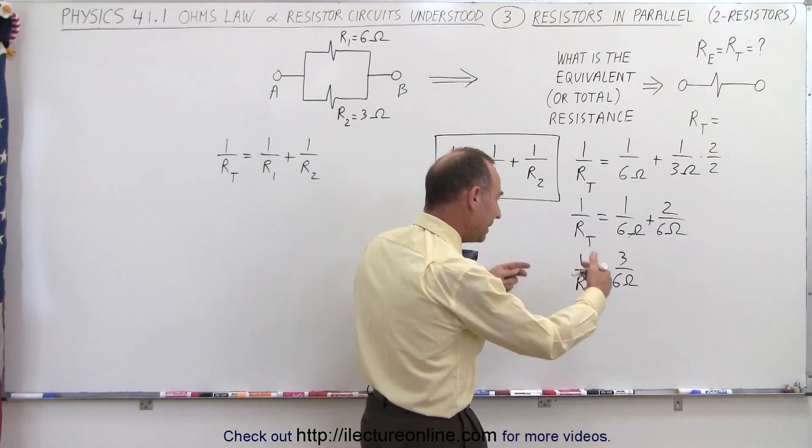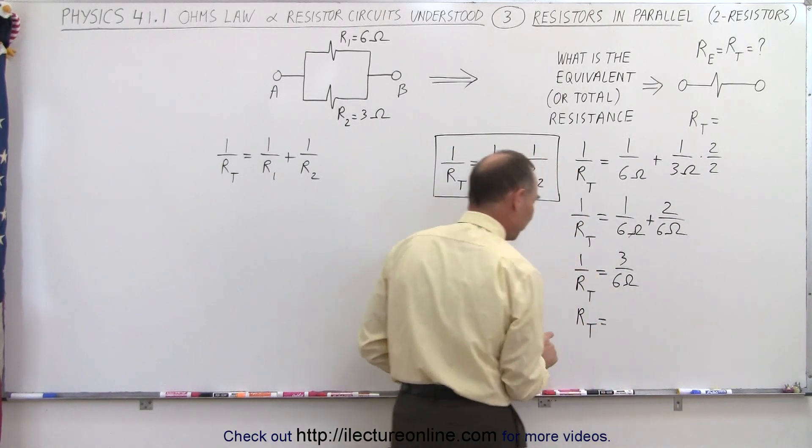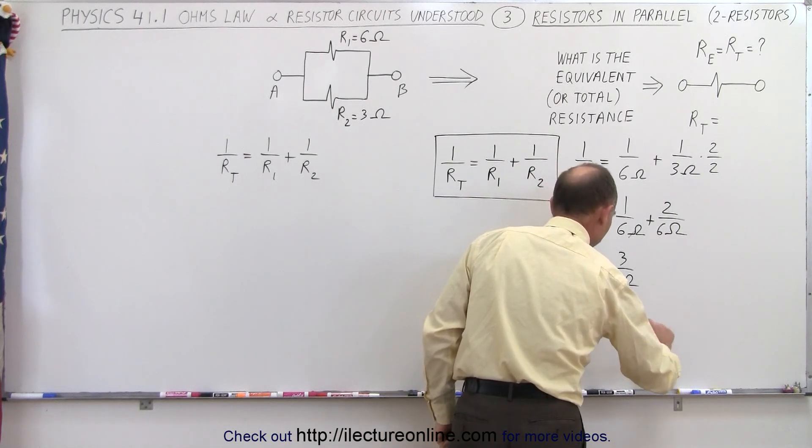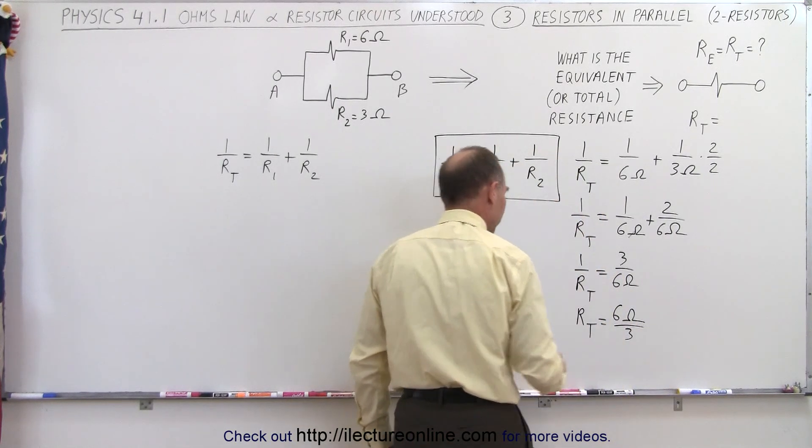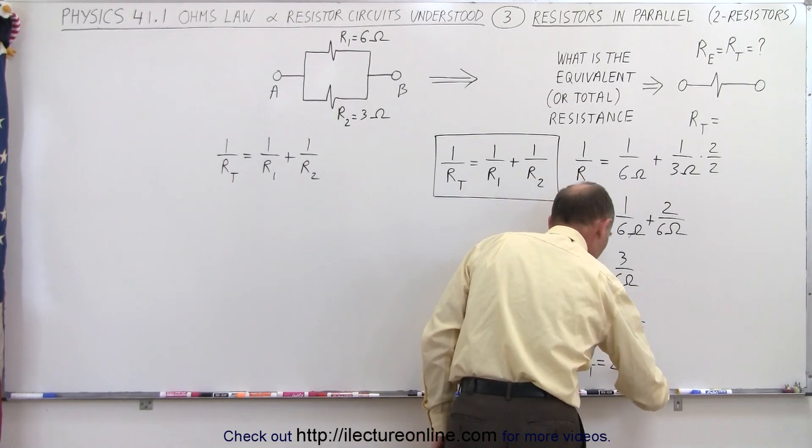Now we can go ahead and take the inverse of this. When we do that, we get R total over 1, or simply R total on the left side. And that then equals 6 ohms divided by 3. And of course, 6 divided by 3 is 2. So that means the total or equivalent resistance is equal to 2 ohms.